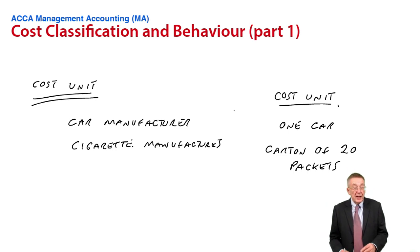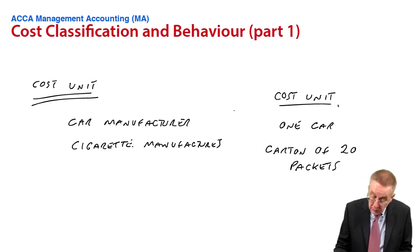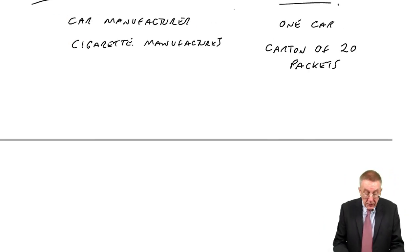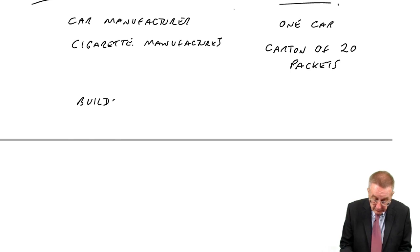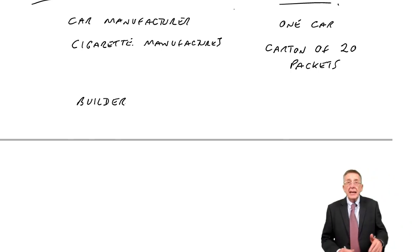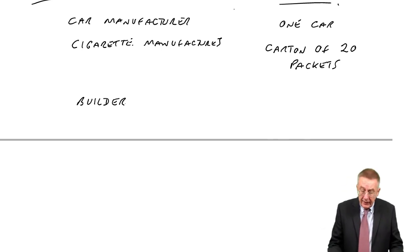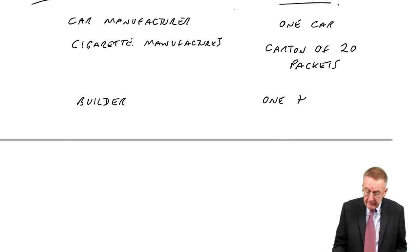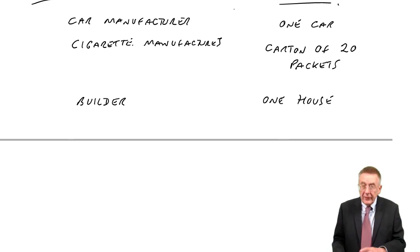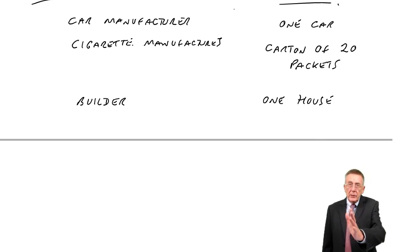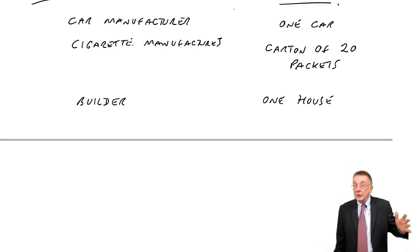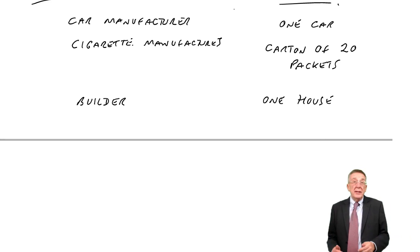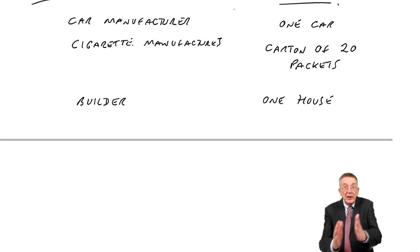So there's no rule. You know, in the exam, they might say, what's the most appropriate cost unit. But it's up to us to decide. If I'm the cigarette manufacturer, we'd have to sit down and say, what is it that we're going to cost out? And I'm suggesting a carton of 20 packets. I say again, there isn't a rule, but I hope you see my point. It's not always immediately obvious. We need to think it through.